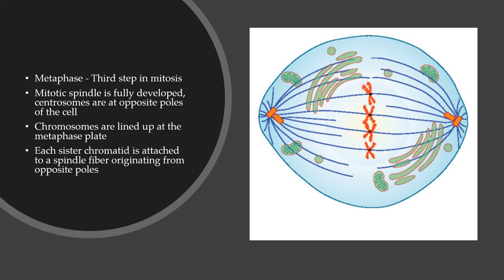The chromosomes consist of linear sections known as chromatids — this here is one chromatid and this here is another. The sister chromatids of the chromosome are attached at either end to the mitotic spindles, or spindle fibers.